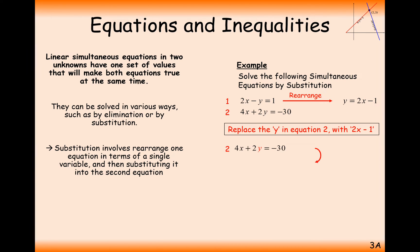Replace y in equation 2 with 2x minus 1 because they're equivalent to each other. We've got 4x plus 2y equals minus 30, but we're going to change this y into 2x minus 1. Now we can expand the brackets and solve this equation to work out x. We get x is minus 3.5, and just like before we substitute x back into either equation to get y is minus 8.